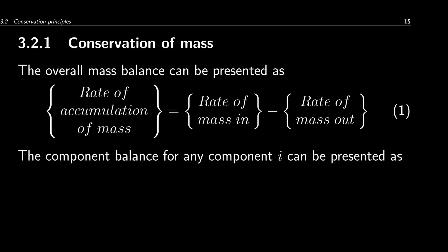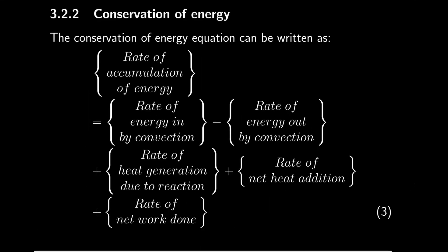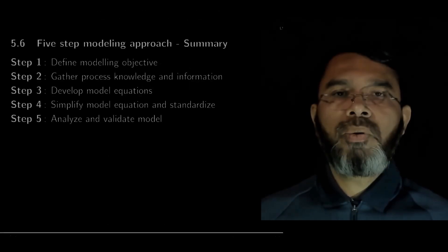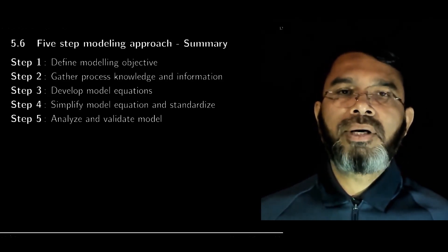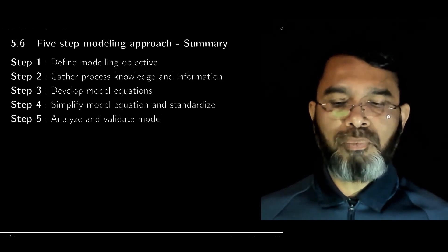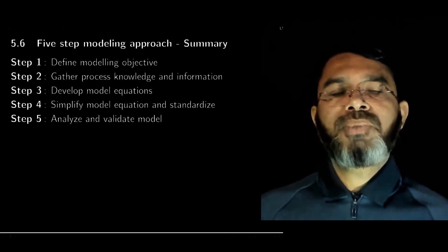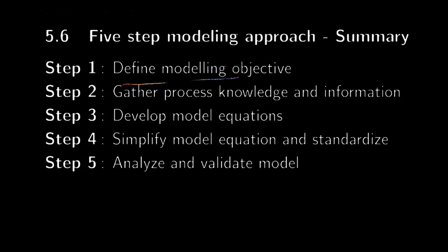We'll start with the use of one conservation principle, such as the overall mass balance or the component balance, and then see how to use all these equations together to find a model for a more complex system. Before the examples, I'll briefly cover a five-step modeling approach that I'll be using. The five-step approach starts with step one: defining the modeling objective.